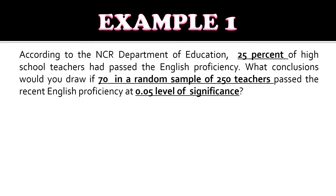Example number one: According to the NCR Department of Education, 25% of high school teachers had passed the English proficiency. What conclusion would you draw if 70 in a random sample of 250 teachers passed the recent English proficiency at a 0.05 level of significance?